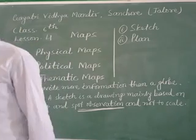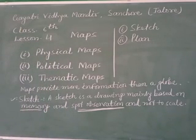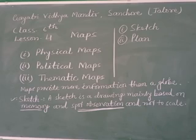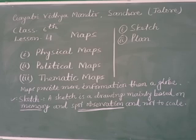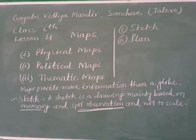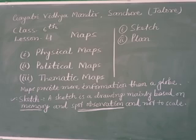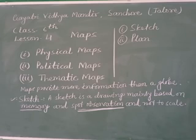Sometimes a rough drawing is required of an area to tell where a certain place is located with respect to other places. For example, when you want to go to your friend's house but you don't know the way, your friend may make a rough drawing to show the way to his house.